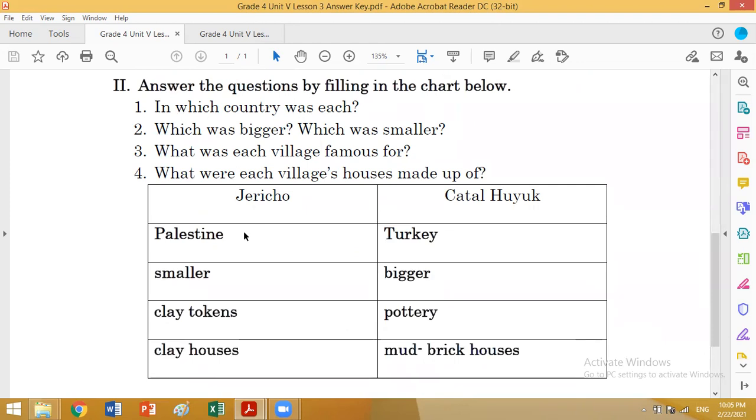Jericho: Palestine, smaller, clay tokens, clay houses. Catal Huyuk: Turkey, bigger, tally marks, tree and mud brick houses.